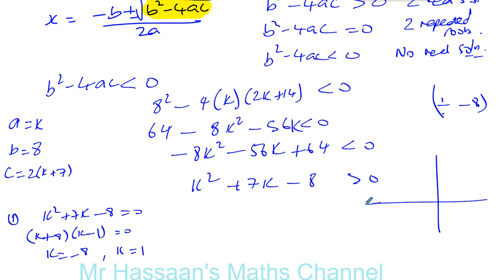So if we make a little sketch, we know that it passes through the x-axis at minus 8 and at 1, and we know that it opens upwards like this. So we want to know when this is greater than 0, when it's above the k-axis.